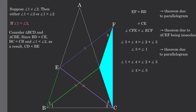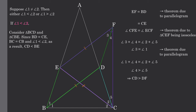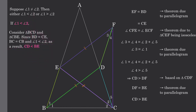Now looking at triangle CDF, we see that side CD must be greater than side DF. Based on the definition of a parallelogram, side DF must equal side BE. And because of this, we can replace DF with BE and show that side CD must be greater than side BE. But earlier we stated that side CD must be less than side BE in order to satisfy that angle 1 is less than angle 2. So what we have here is a contradiction.